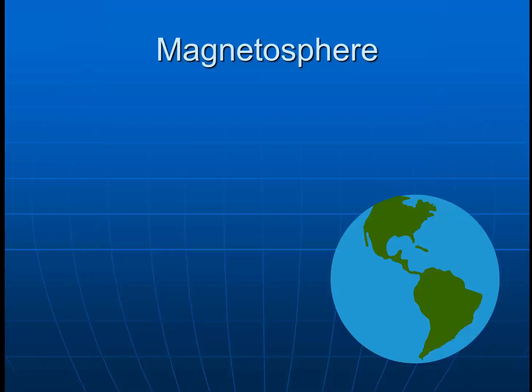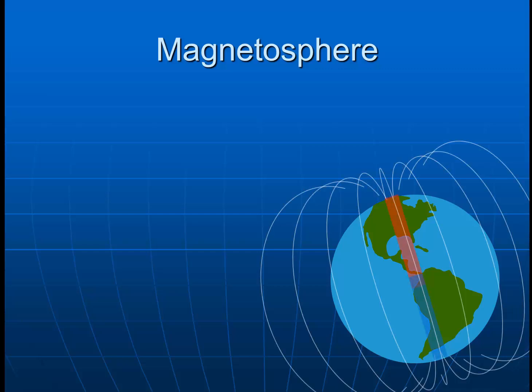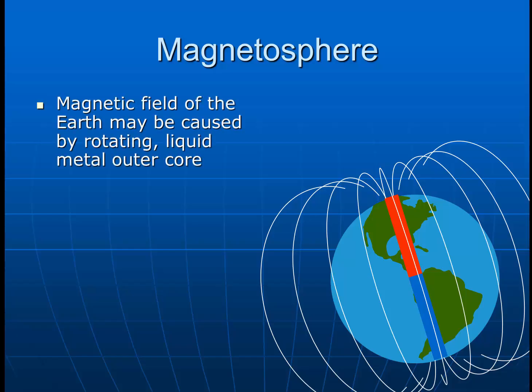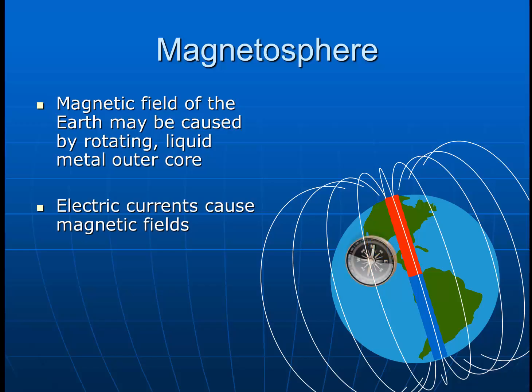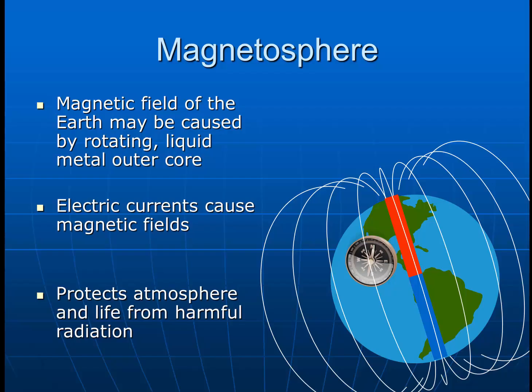Finally, the magnetosphere. The Earth has a powerful magnetic field. The magnetic field is not completely understood on planet Earth, but we do know it exists. It may be caused by the rotating liquid metal in the outer core of the Earth. We also know that electric currents are important for the cause of the magnetic field. Some combination of the rotating and convecting liquid in our core and electric currents flowing through that liquid are likely the cause of the Earth's magnetic field. One thing we can say for certain is that the magnetic field is much more useful than just for navigation, because it protects all life on planet Earth from harmful radiation from deeper in space.